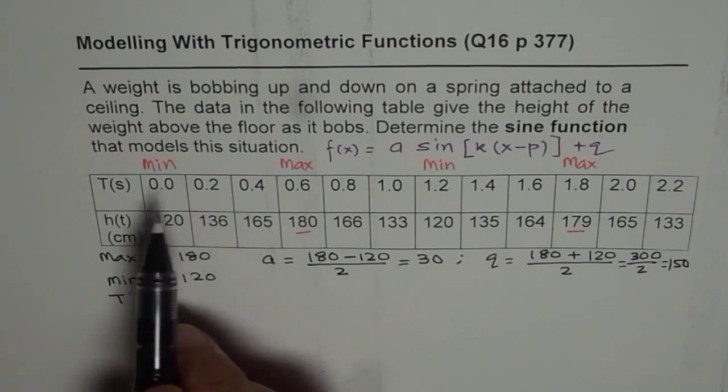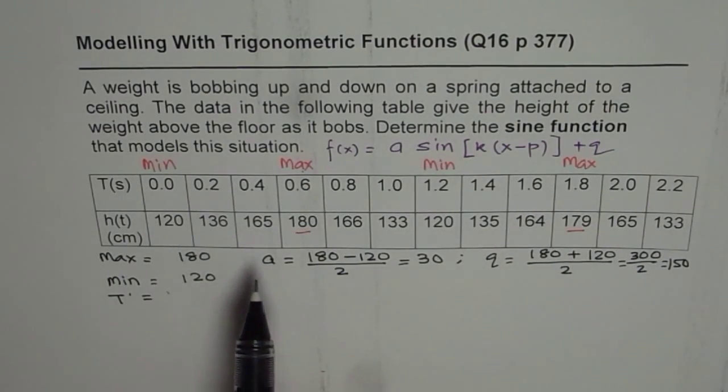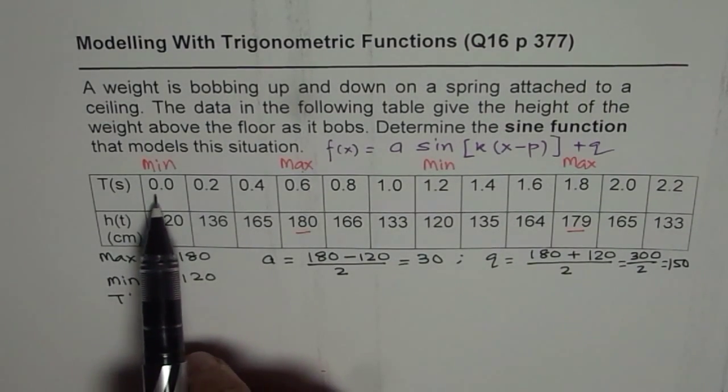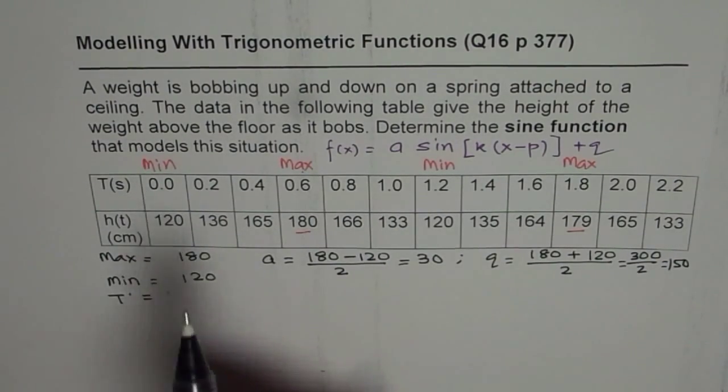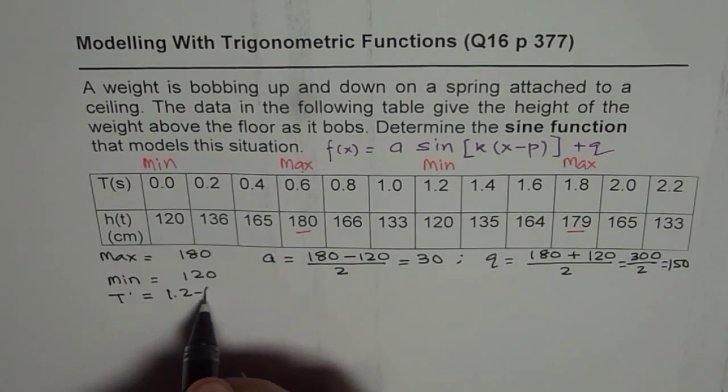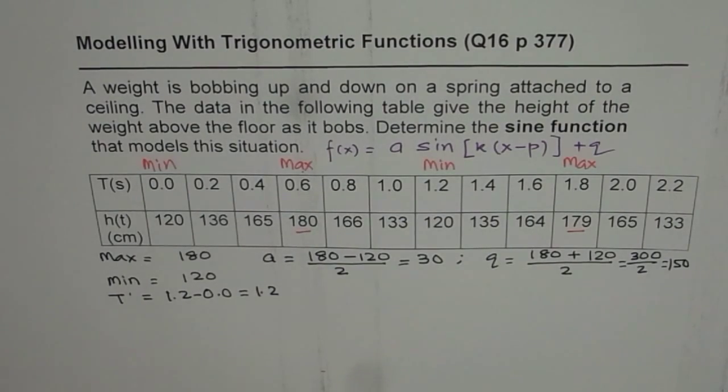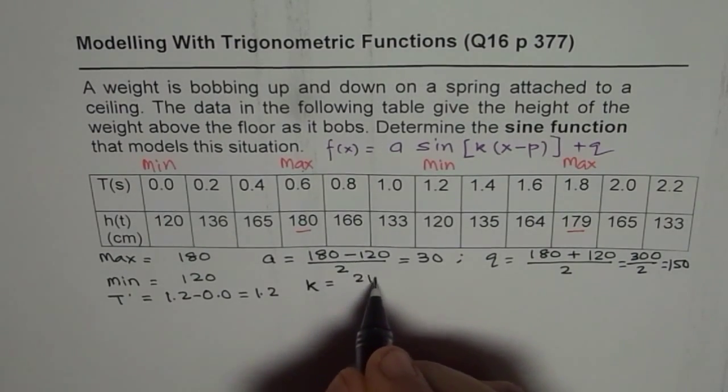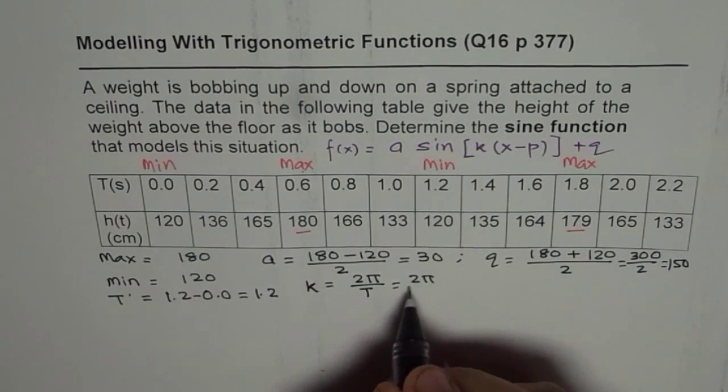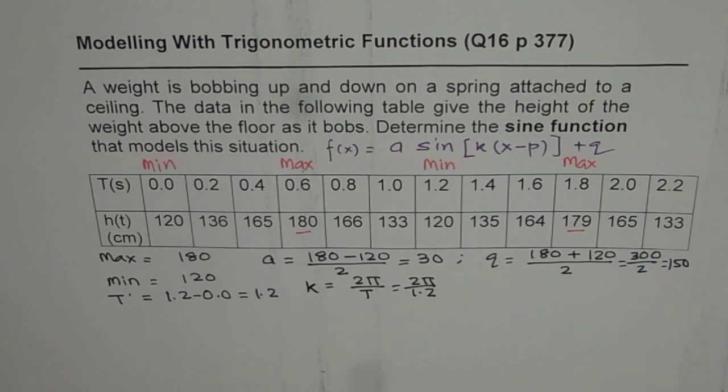Time period is distance or time between two minimums or two maximums. So as we can see, this difference between two minimums occurs at time equals to 1.2 and 0.0. So time period is 1.2 minus 0.0, which is 1.2 seconds. Now once we know time period, we can find the value of K, which is 2π divided by the time period. So which is 2π divided by 1.2.